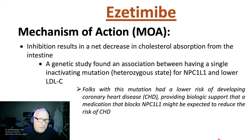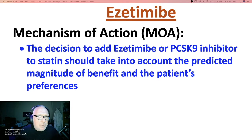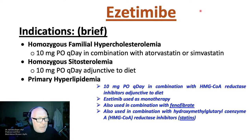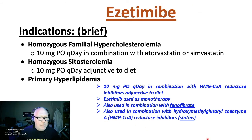Folks with this NPC1L1 mutation had a lower risk of developing coronary heart disease. The decision to add Ezetimibe or other agents to a statin should take into account the predicted magnitude of benefit and the patient's preferences. Ezetimibe is indicated in homozygous familial hypercholesterolemia, homozygous sitosterolemia, and primary hyperlipidemia. It can be used as monotherapy, or in combination with fenofibrate or statins.